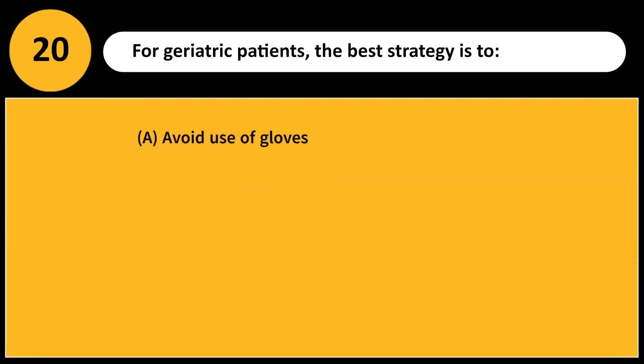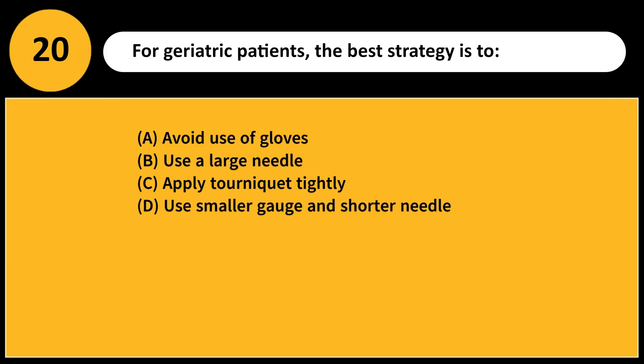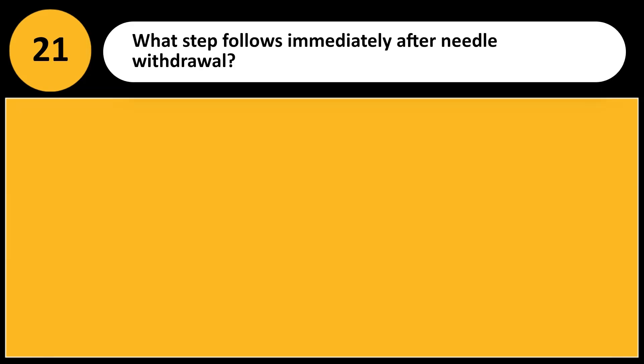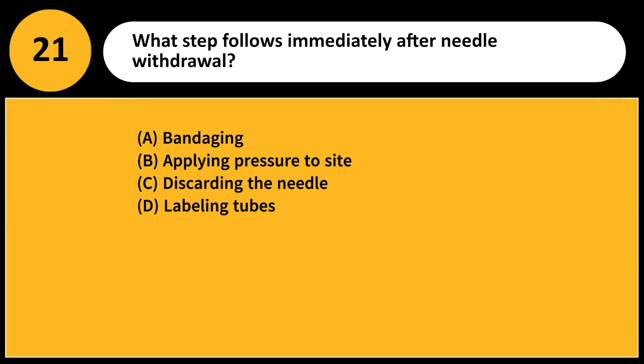For geriatric patients, the best strategy is to: A. Avoid use of gloves. B. Use a large needle. C. Apply tourniquet tightly. D. Use smaller gauge and shorter needle. Answer: D. Fragile veins in elderly patients require gentle handling with smaller needles.